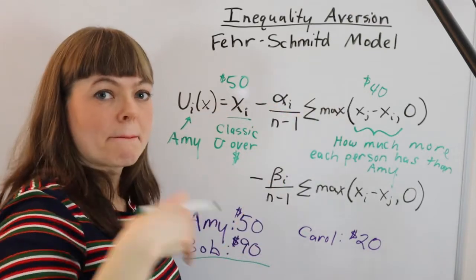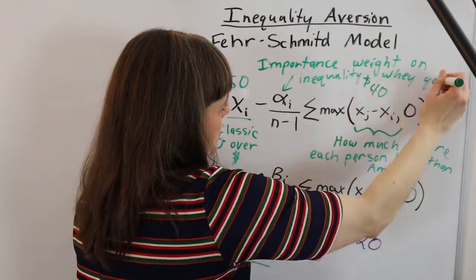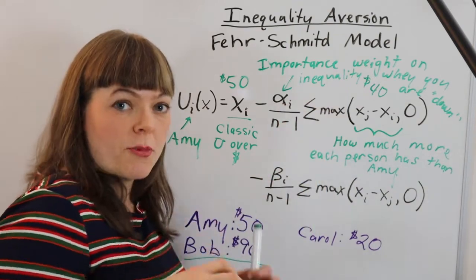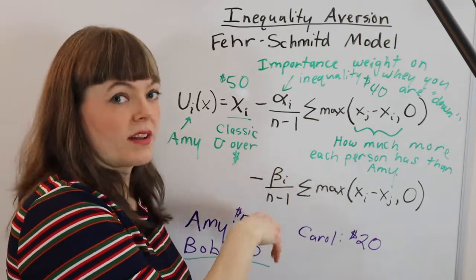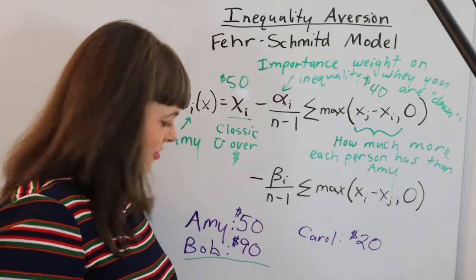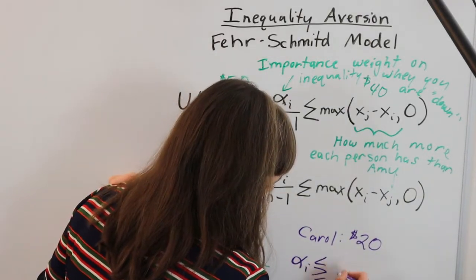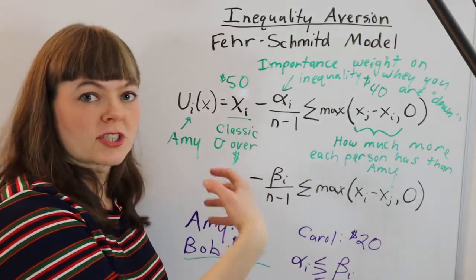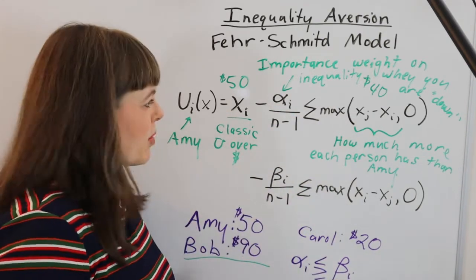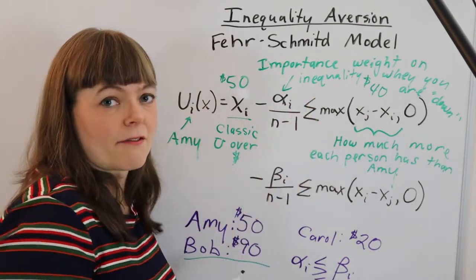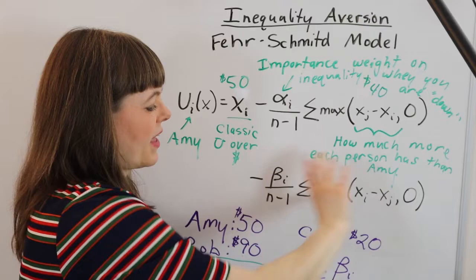The term alpha is going to be the importance weight that Amy places on other people having more than her — that's the importance weight on inequality when you are the person who is down. Beta is the importance weight on inequality when you are the person who has more than the other. One question I'll generally ask my students is: which is bigger, alpha or beta? And most people will figure out that alpha is going to be higher than beta for most people, if not all people. Most people are way more sensitive when other people have more than them than when they have more than other people.